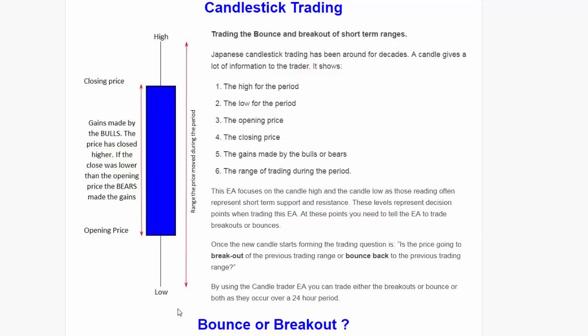What really happens in the formation of a candle is that there is support and resistance established at the top and below the candle, and that makes great trading opportunities. In slow markets, the resistance at the top is likely to hold and bounce the price back in, and the low — which represents support — is expected to hold and bounce the price back into the range of the previous candle.